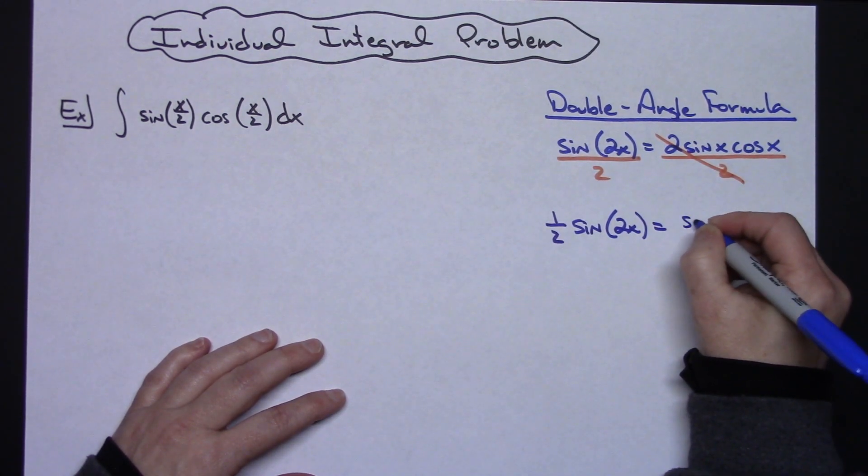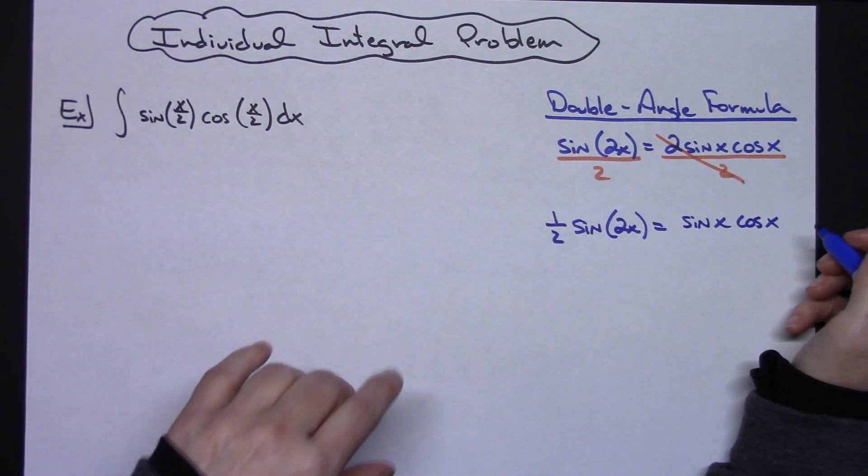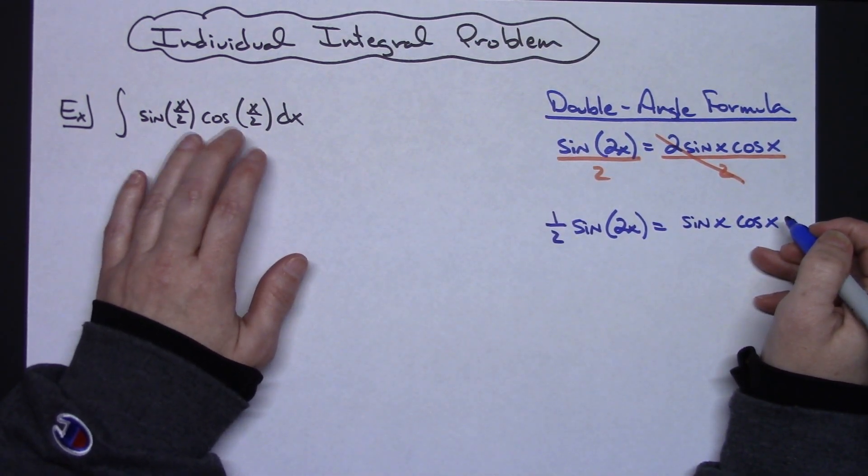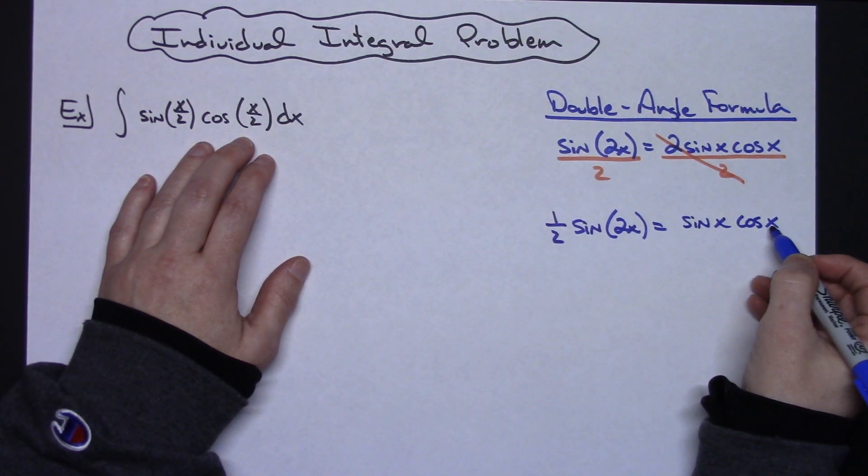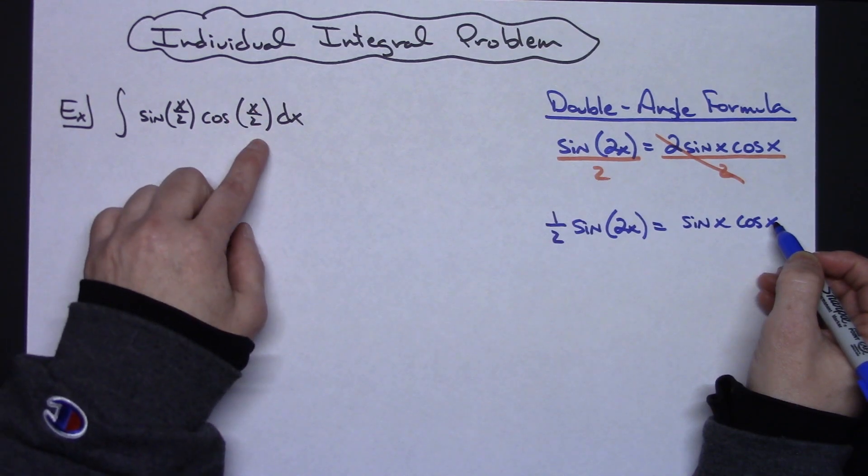Alright now I'm down to just sin(x)cos(x). Okay, still not exactly what I've got here because this is sin(x)cos(x). I need this to be x/2, x/2.